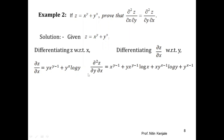Applying the product rule to differentiate y·x^(y−1): keeping x^(y−1) as it is, derivative of y is 1, giving x^(y−1); plus keeping y as it is, derivative of x^(y−1) is x^(y−1)·log x. For the second term, differentiating y^x·log y with respect to y: we get x·y^(x−1)·log y plus y^x · (1/y), which equals y^(x−1). This gives us ∂²z/∂y∂x.